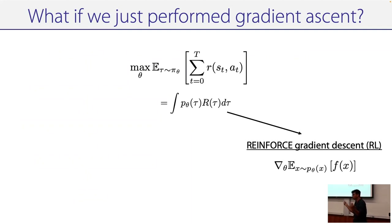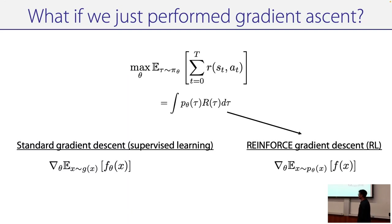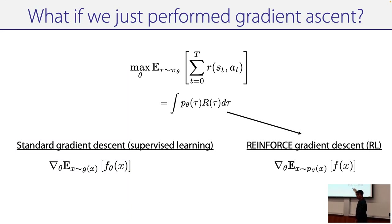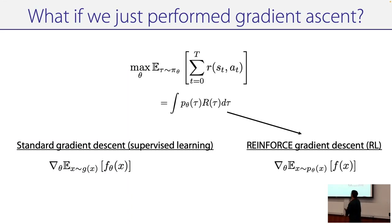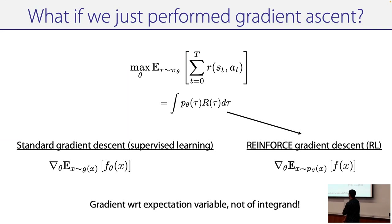If you try to take the gradient of this, why is this any different than supervised learning? In supervised learning, the thing you're taking the gradient with respect to is separate from the integral. But here, the thing you're taking the expectation with respect to is the same thing you're taking the derivative with respect to. So in one case you can pass the gradient all the way through, and in the other it's a little more dicey. That's why it's a little different than standard supervised learning.